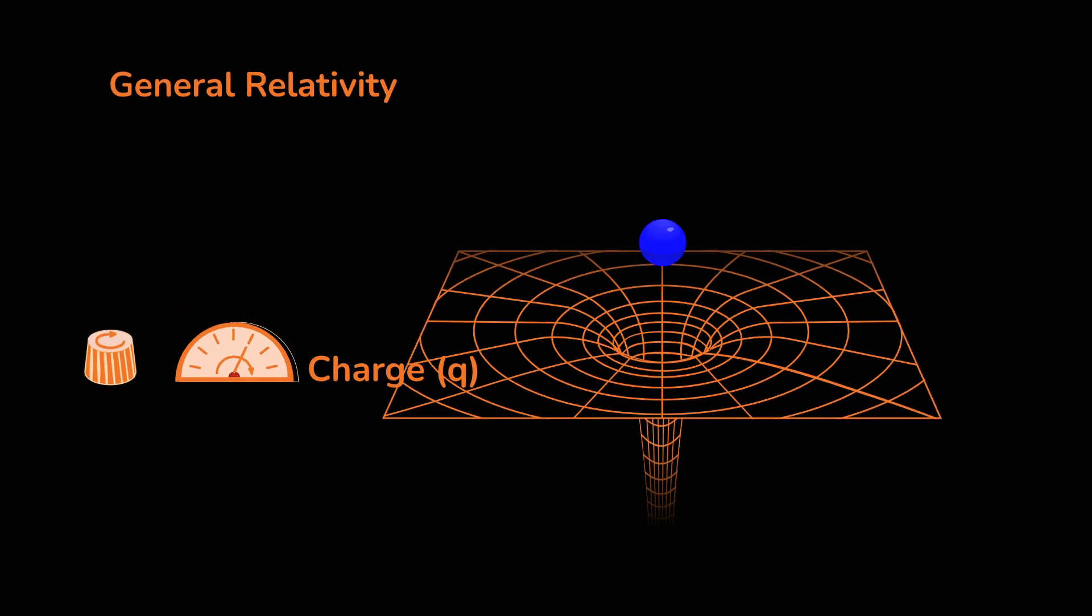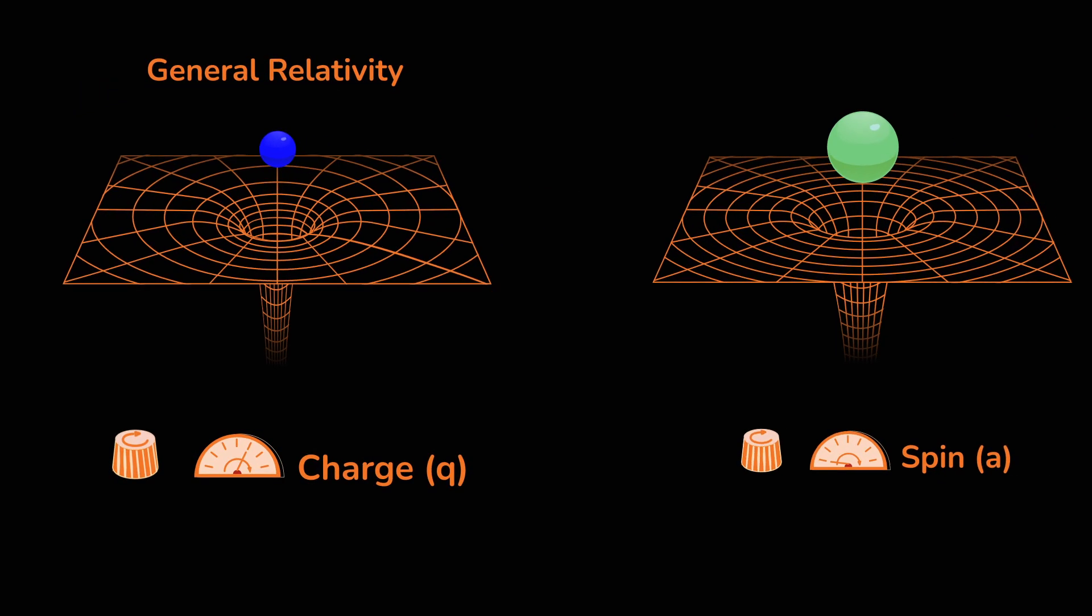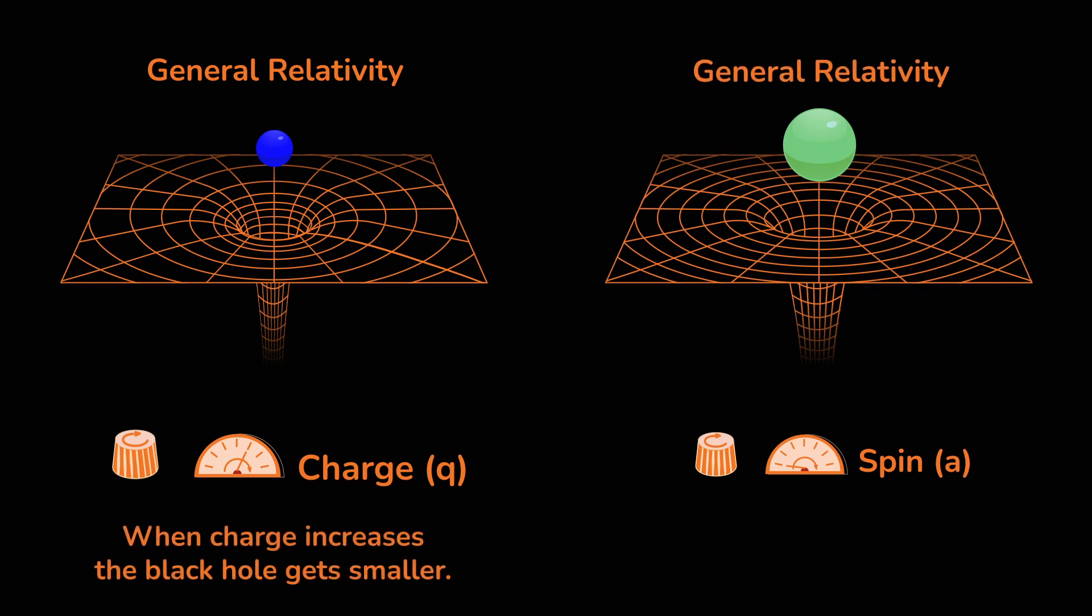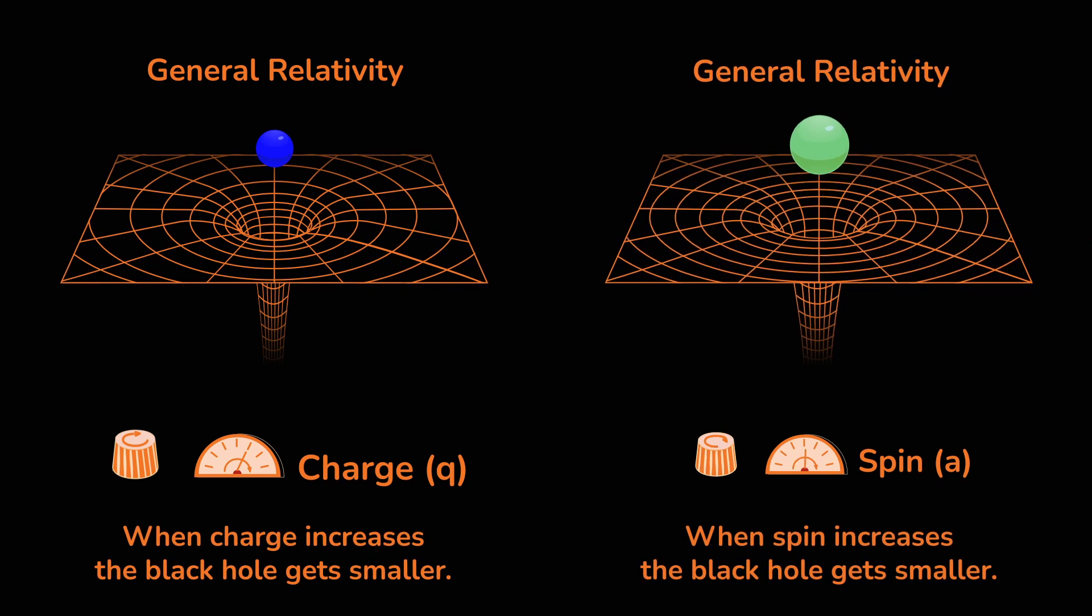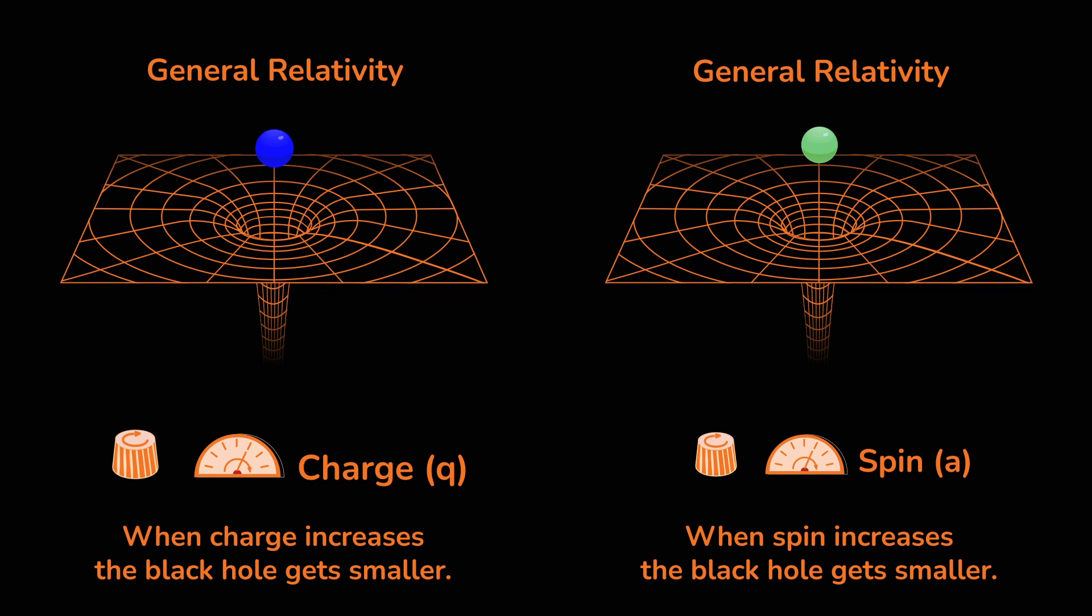The size of the event horizon depends on the mass, spin and charge. Uncharged and non-spinning black holes are larger than charged or rotating ones.